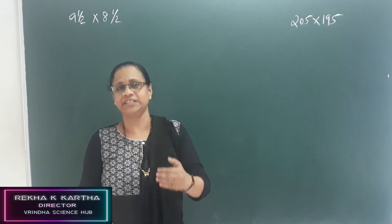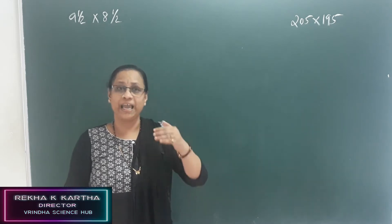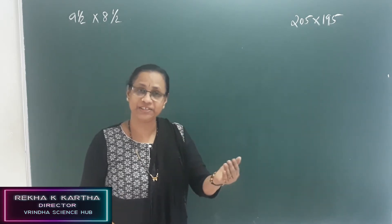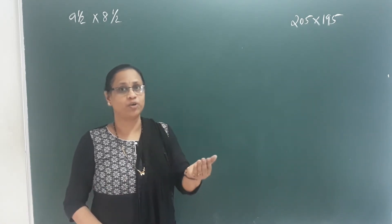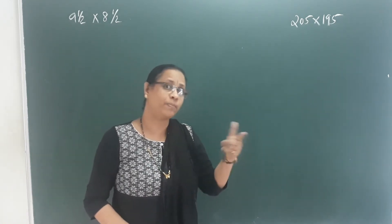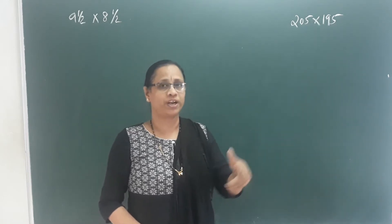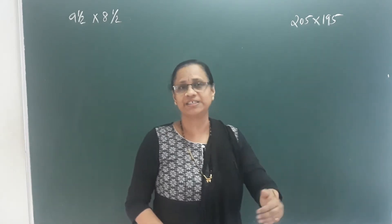Now the third identity is: a plus b into a minus b, that is equal to a square minus b square. That is what we are going to study from the last class.